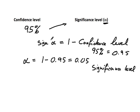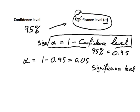With this equation, alpha equals 1 minus the confidence level, you can easily find out what your significance level is because that is what you usually use when you do hypothesis testing.